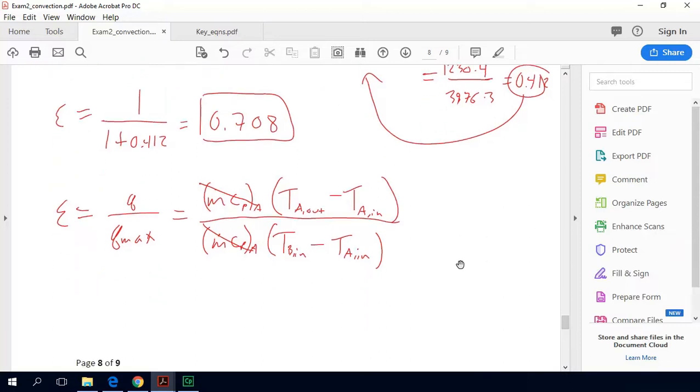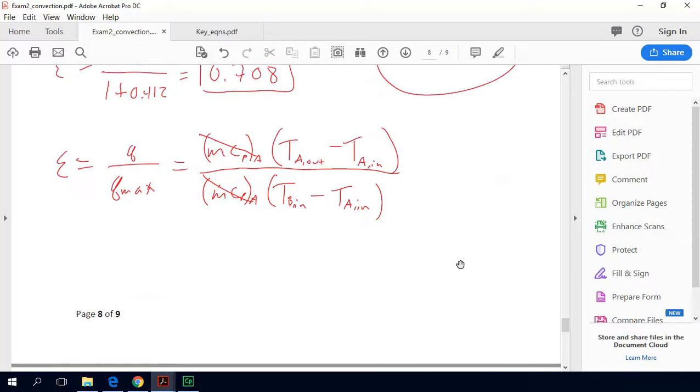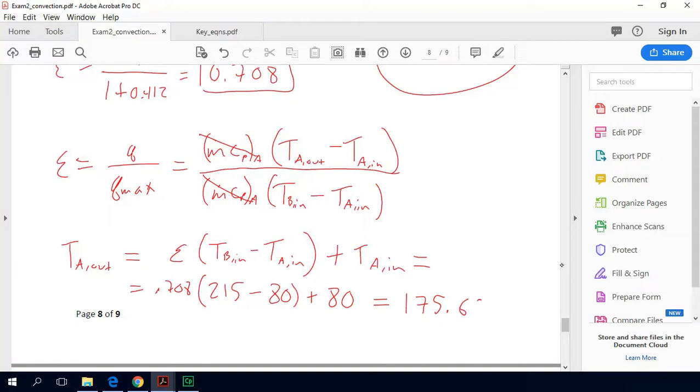So now, if we solve this for T A out, which is what we're really looking for, we get T A out equals epsilon times T B in minus T A in plus T A in. So our effectiveness was 0.708, T B in was 215 degrees Celsius, T A in was 80 degrees Celsius, so that leaves us with a temperature of 175.6 degrees Celsius.